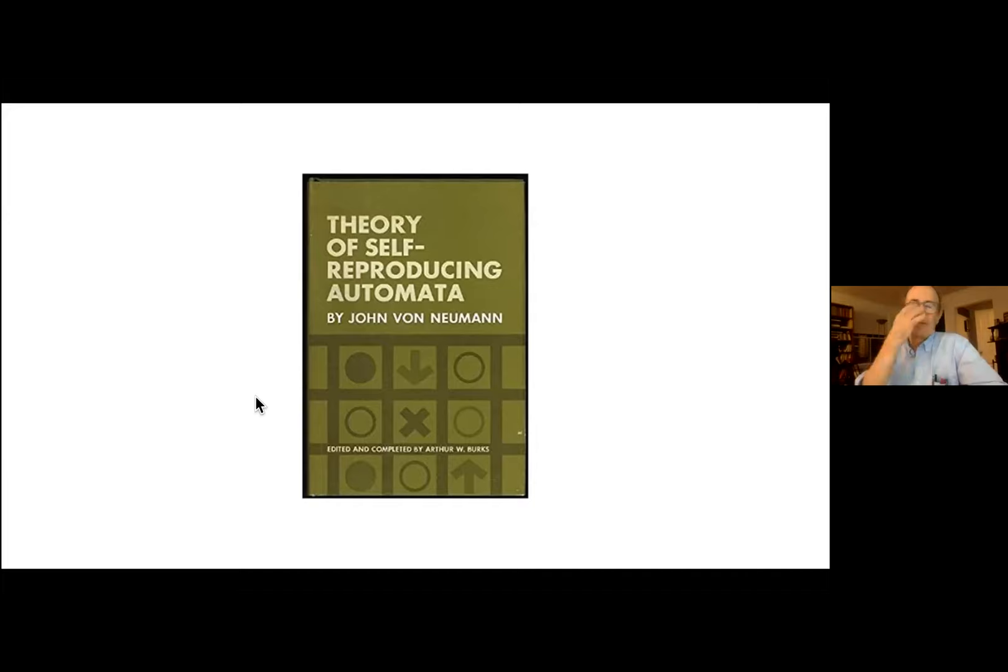project, the theory of self-reproducing automata. He didn't get to finish his book on the subject that he was working on. But he had extensive notes which were collected by his colleagues and disciple Arthur W. Burks into this remarkable book, theory of self-reproducing automata, in which he gives profound ideas about what's necessary to make a self-reproducing automaton that anticipated later developments in biology, as I'll show you. And he gave very detailed designs of specific cellular automata, special kinds of computer programs that would embody self-reproducing machines, self-reproducing automata.